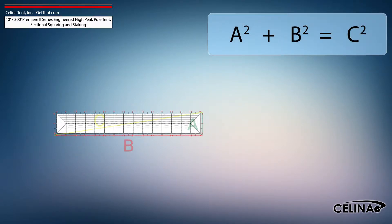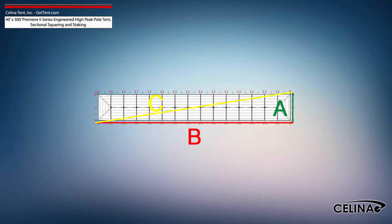Using the Pythagorean theorem and adjusting out for 5-foot staking, the entire tent footprint will be 50-foot by 310-foot with a 314-foot diagonal length.